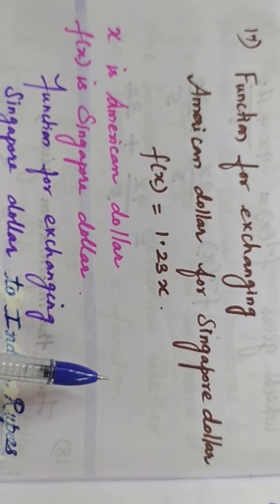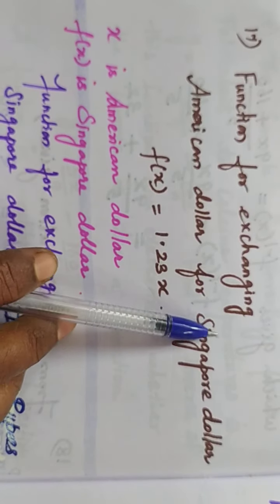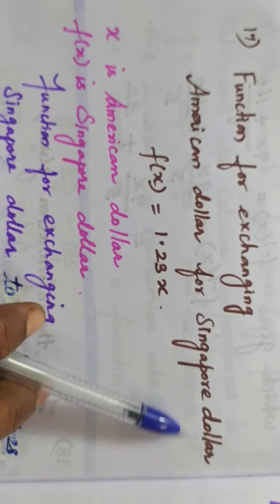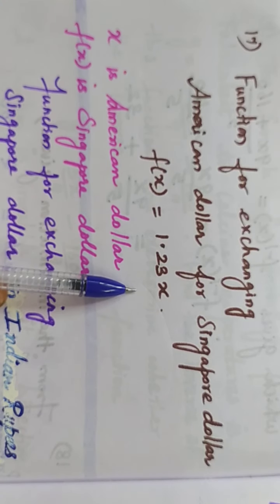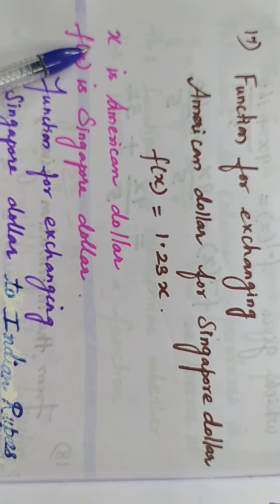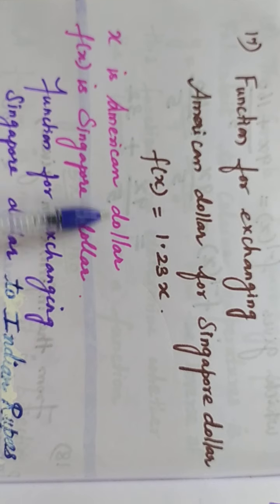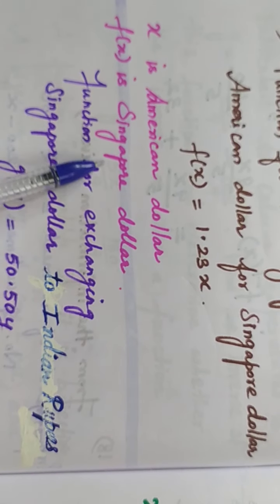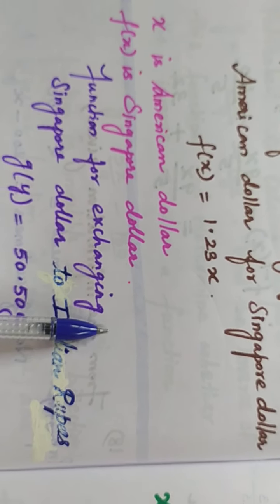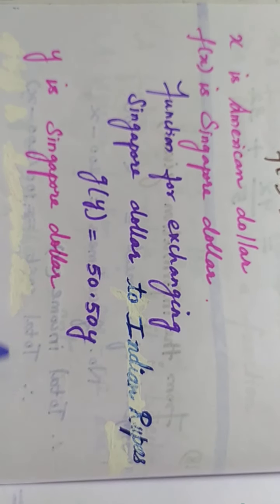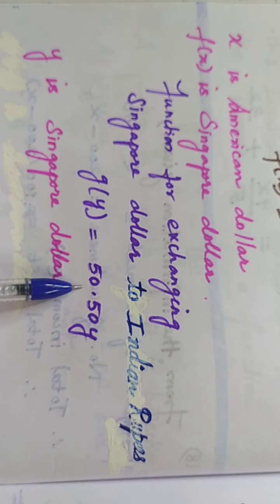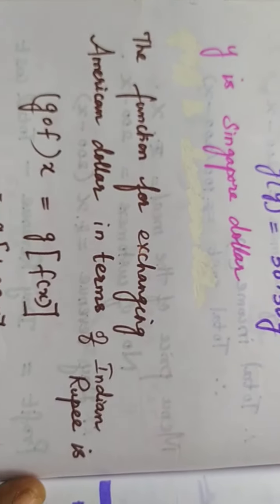The function for exchanging American dollar to Singapore dollar is f(x) = 1.23x, where x is the American dollar and f(x) is the Singapore dollar. Then the function for exchanging Singapore dollar to Indian rupee is given by g(y) = 50.50y, where y is the Singapore dollar.